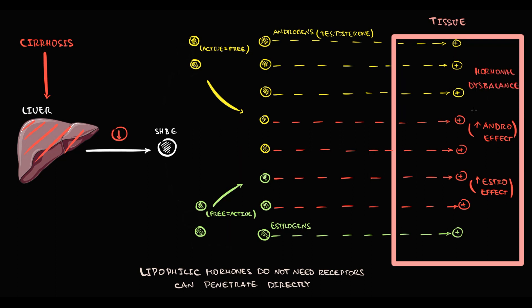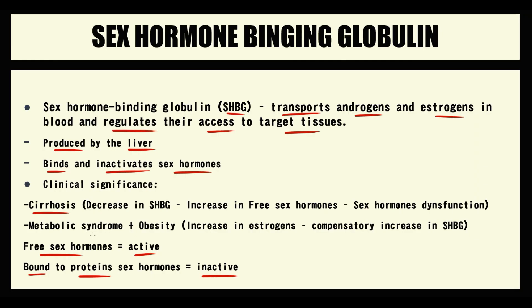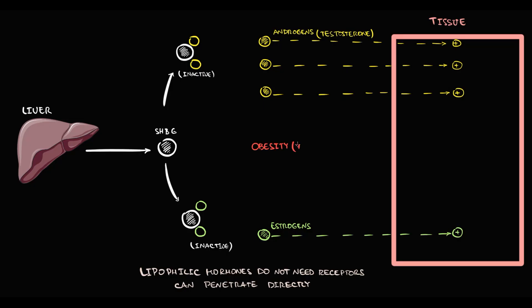The second pathology that can affect the level of sex hormone binding globulin is obesity. Obesity causes increasing estrogen production. As a result, the level of estrogens in the blood increases. The problem is that increasing amount of free estrogens will cause hyperestrogenemic effect on tissues. And especially if you are a man, probably decreased libido is not what you dreamed about.